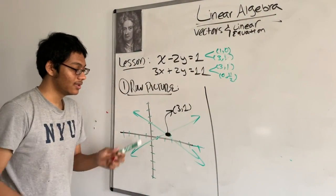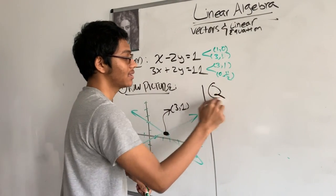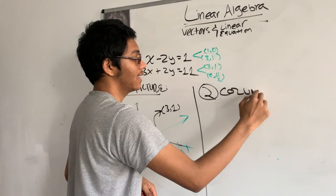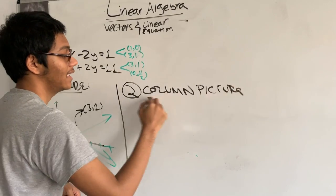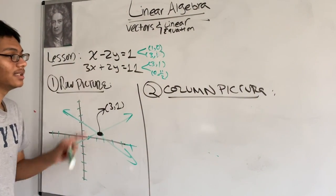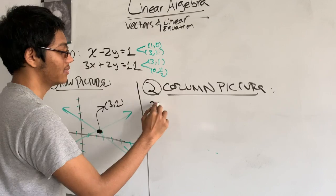And that's exactly what we did by graphing them. So that's the row picture, but really a new perspective is the column picture. So we're going to take the columns in each of these two lines. Let me show you what I mean.